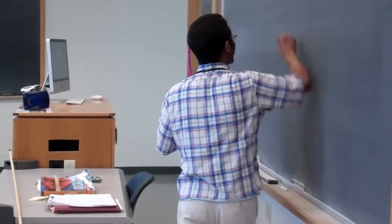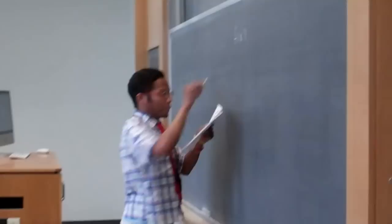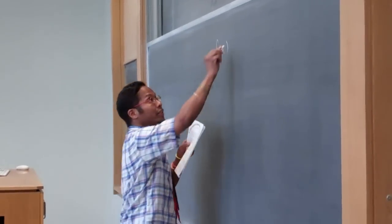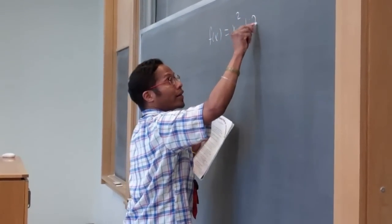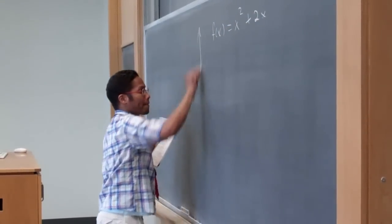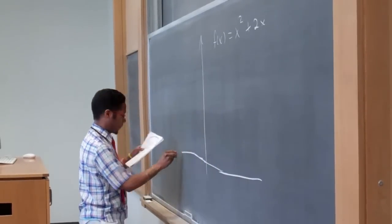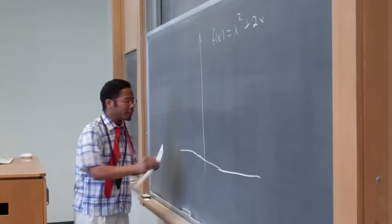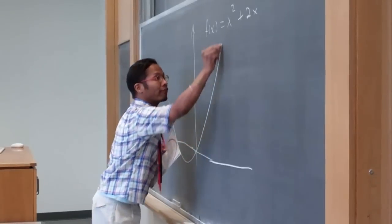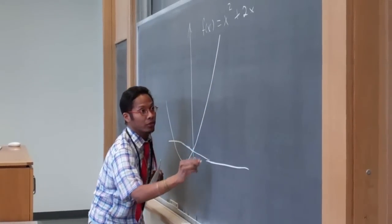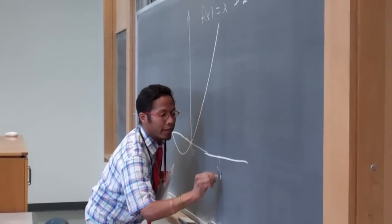While you were on spring break, you probably considered f of x, a parabolic function x squared plus 2x. Perhaps you then considered the region under this graph, from x equals 0 to x equals 1 and a half.